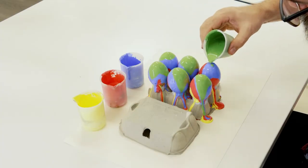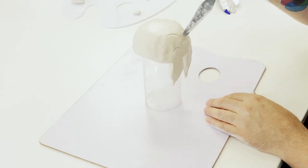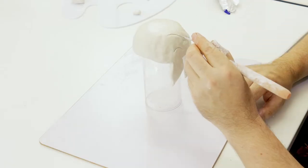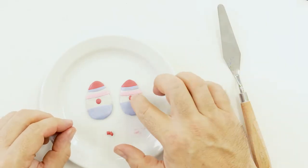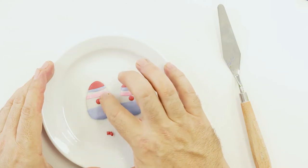A hot cross bun trinket dish, some easter egg earrings, a cute pink bunny trinket dish and we'll also be doing some pouring art on eggs. It's going to be great fun so let's get into it.